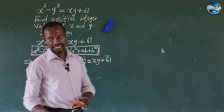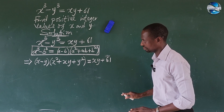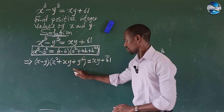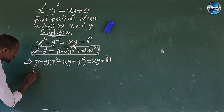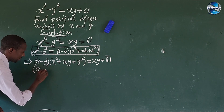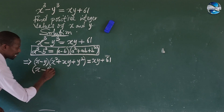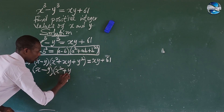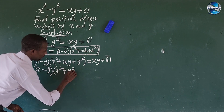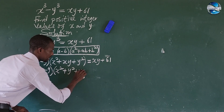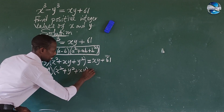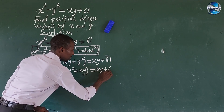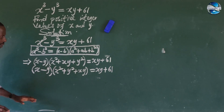Let's look at this carefully. We can bring these terms together. Writing this way gives us: (x minus y) times [x² plus y² plus xy] equals xy plus 61.